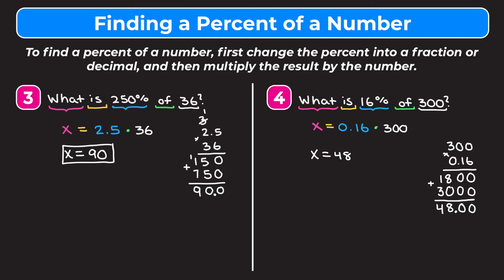We mentally check that this makes sense. 16% is bigger than 10%, and 10% of 300 is 30 — so we should be bigger than 30. We can also check it's less than 20%, which is double of 10%: 10% of 300 is 30, so 20% of 300 is 60. Since 16% is between 10% and 20%, our answer of 48 should be between 30 and 60 — and it is — so we know we're in the right ballpark.